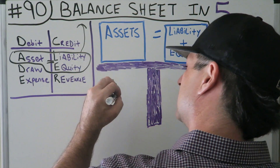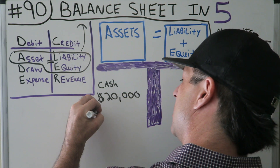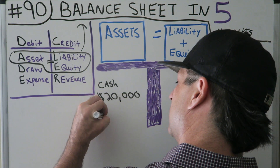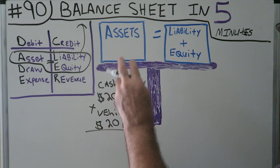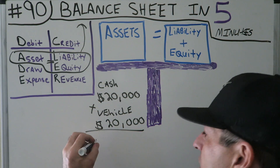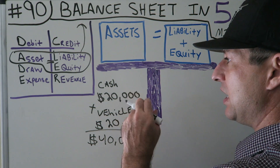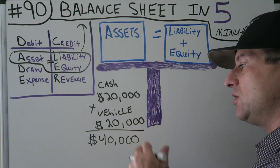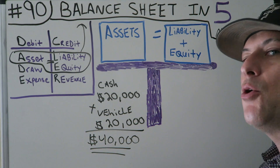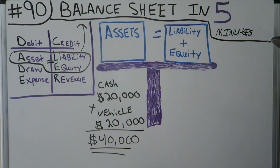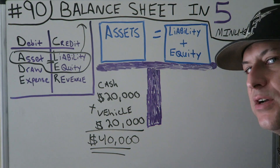We're going to do cash $20,000, and we're going to do a vehicle $20,000. So that means our assets are $40,000 — that's what we have in the company. We have cash $20,000 and a vehicle $20,000, so $40,000 in our assets. That means what has to balance on the other side — what has to be either a liability or equity — is $40,000.